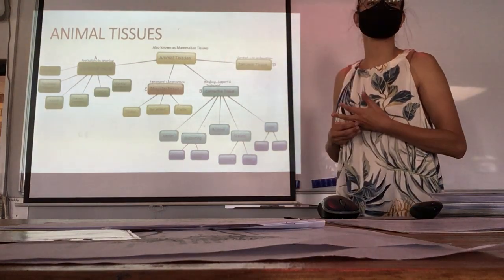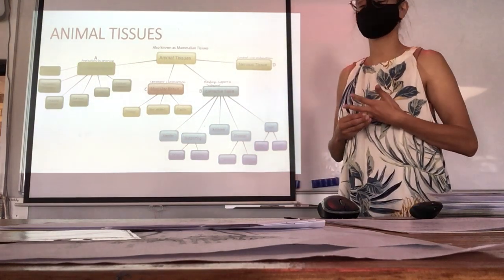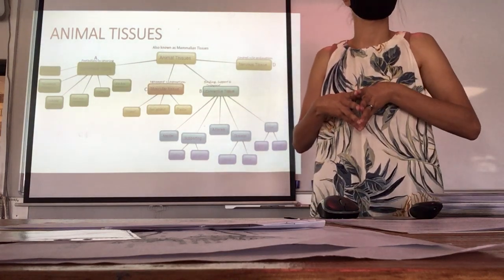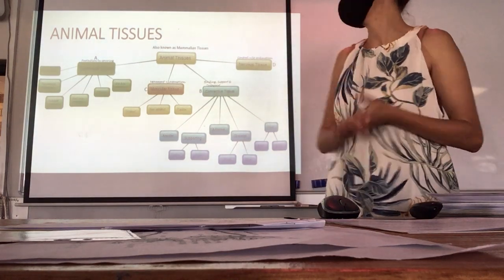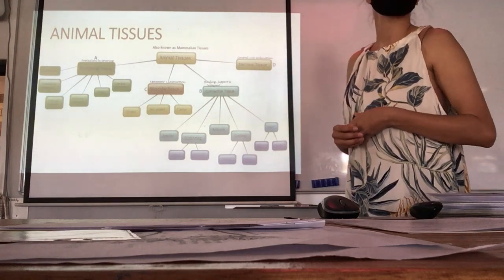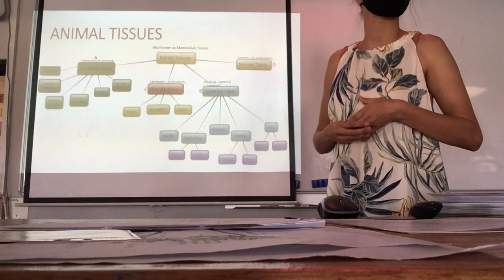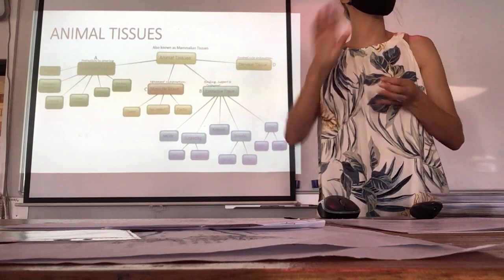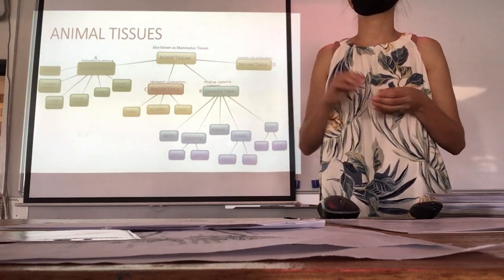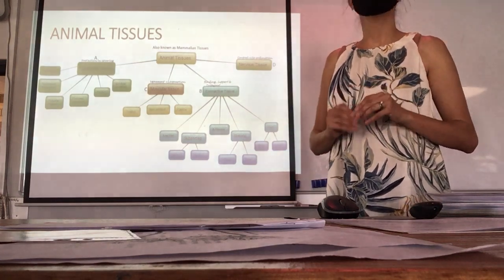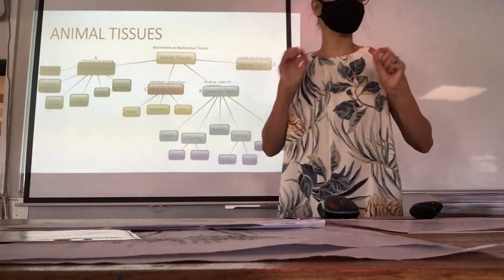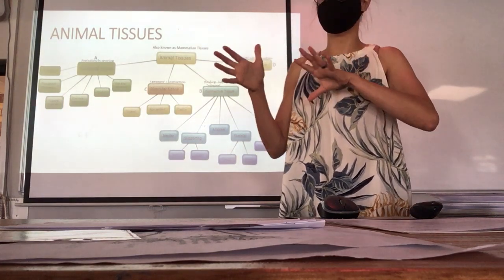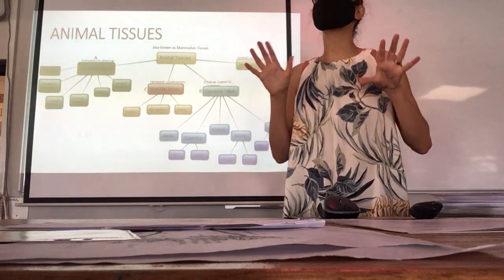Cuboidal — cube-shaped. And one example of where you would find it? Kidneys. Then columnar — column-shaped. And what is normally on top of it? Cilia. Just to clarify, yesterday we spoke about villi and we spoke about cilia — they are quite different.